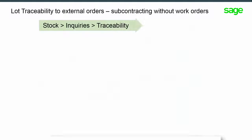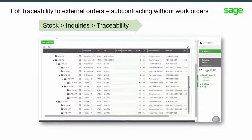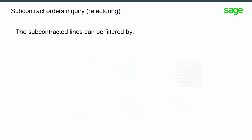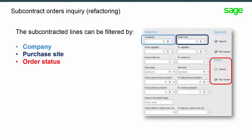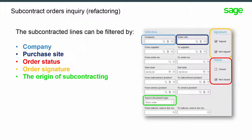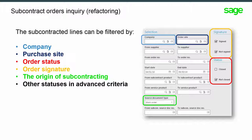The subcontract order inquiry has been updated to be more compliant with the other purchase inquiries. Now the inquiry lines can be filtered by company, by purchase site, by order status, order signature, and by the origin of the subcontracting, which could be work order or subcontract order. Also, with other statuses in the advanced criteria like received, invoiced, and printed.